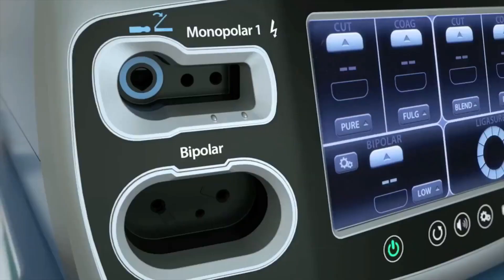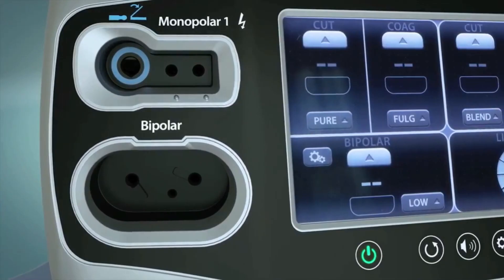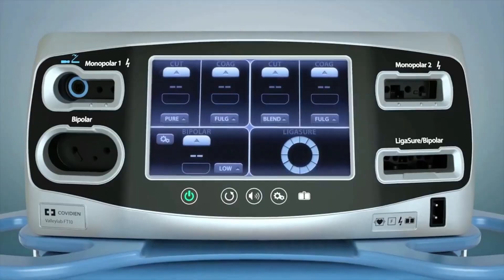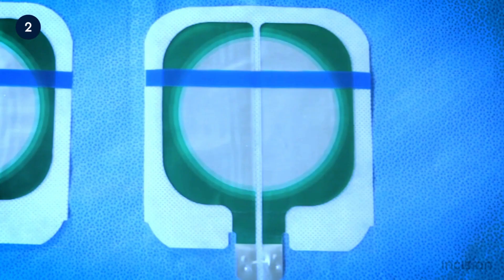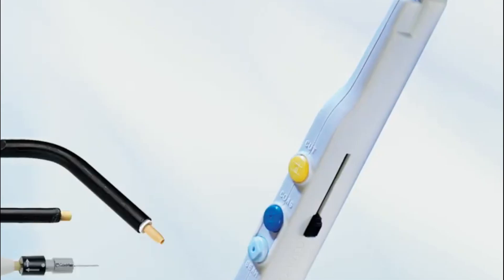Let's look into the components of an electrosurgical unit. An electrosurgical unit, or ESU, consists of a generator, a handpiece, and grounding electrodes. The device is controlled using a switch on the handpiece or a foot switch.